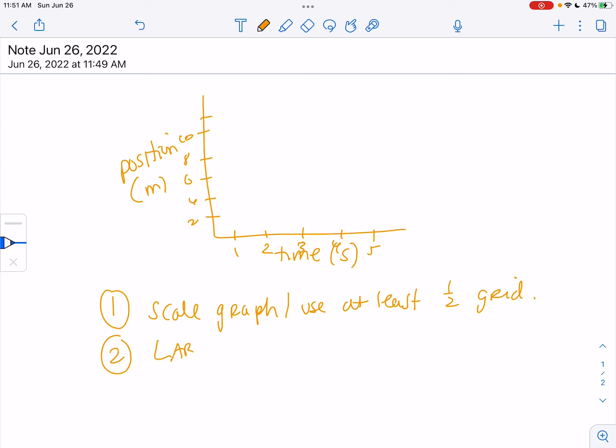The second thing is you have to label including units. And so these units are pretty simple, but then it's going to get a little more complicated, which we'll get into later. But make sure you have both the variable name, like position and time, and the units, meters and seconds. So if you don't have all of that, then you'll lose that point.